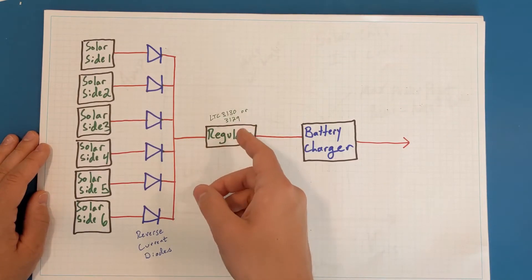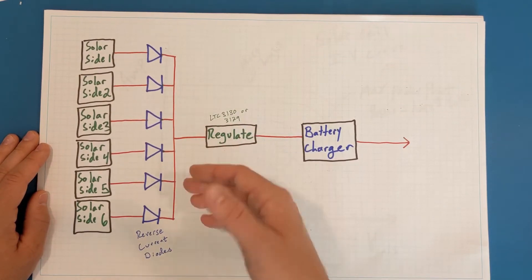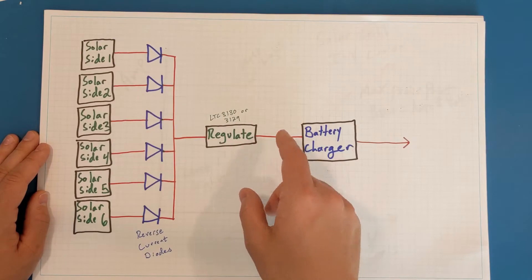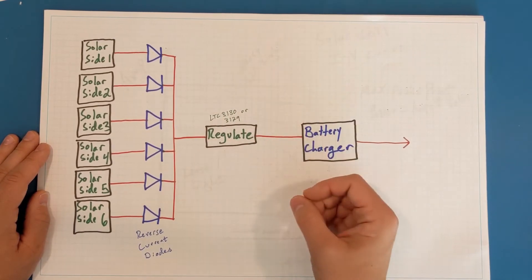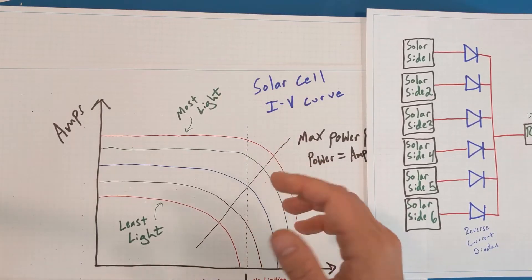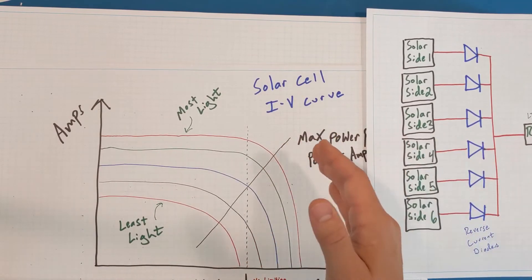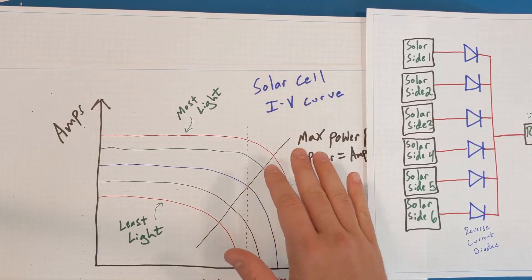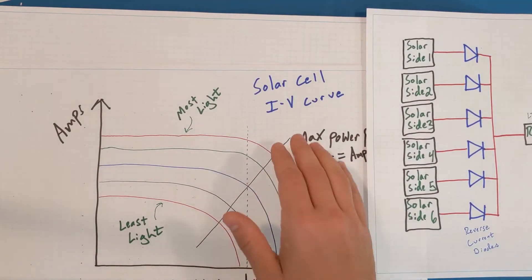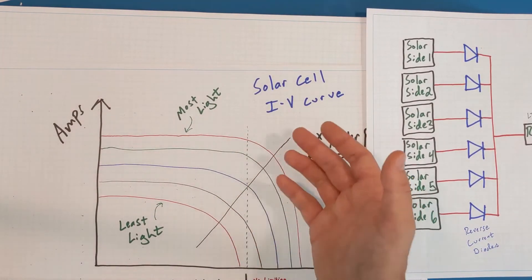Then I only need one LTC3130 to convert the solar cell input into a consistent 5 volt output for the battery charger. The reason I can connect these solar cells in parallel, and the reason why, although it is simpler, it results in a lower overall power efficiency, is based on the IV curve of these solar cells.